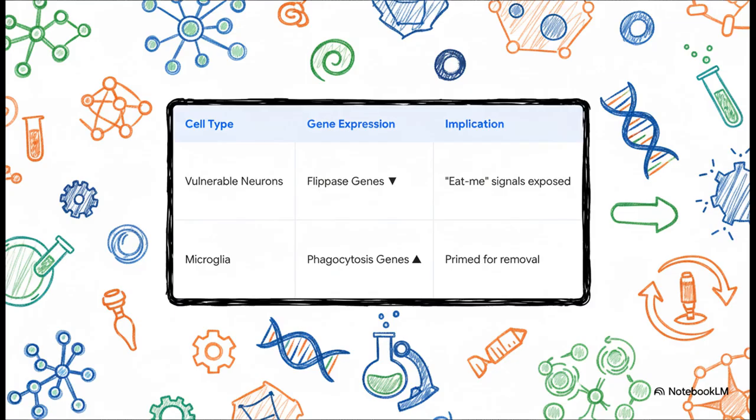And here is the incredible connection that Cosmos made. It wasn't just one thing happening. It was a perfectly timed, coordinated event. It found that in those vulnerable neurons, the genes for that flippase maintenance crew were shutting down. So the neuron's outer wall starts to fail, and those eat-me signals get exposed.